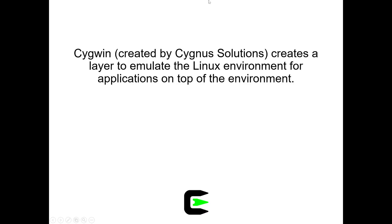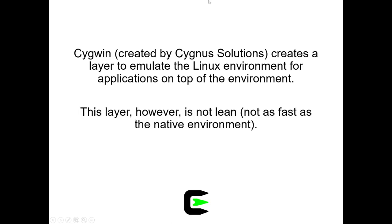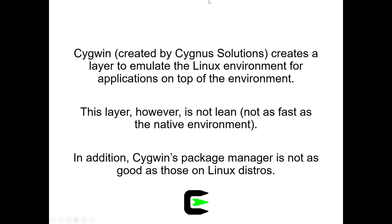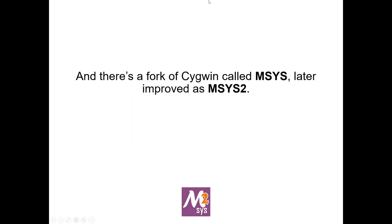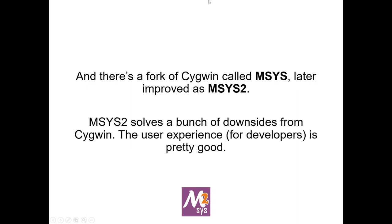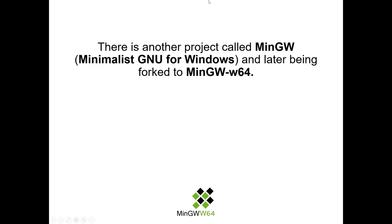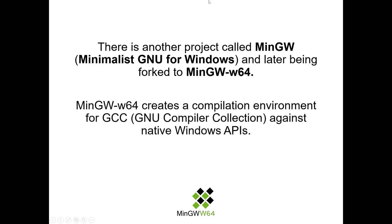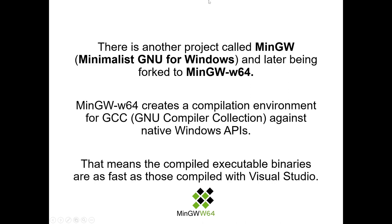There's also Cygwin, created by Cygnus Solutions. It creates a layer to emulate the Linux environment for applications on top of Windows. This layer is not lean — not as fast as the native environment. Cygwin's package manager is also not as good as those on Linux distros. There's a fork called MSYS, later improved as MSYS2, which solves a bunch of Cygwin's downsides with a pretty good developer experience. There's also MinGW, later forked to MinGW-w64, which creates a compilation environment for GCC against native Windows APIs.